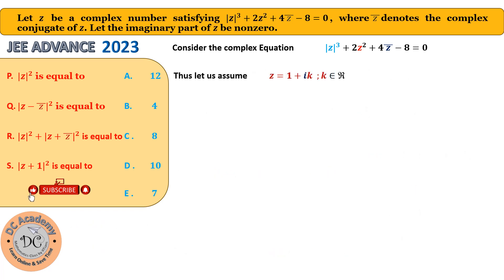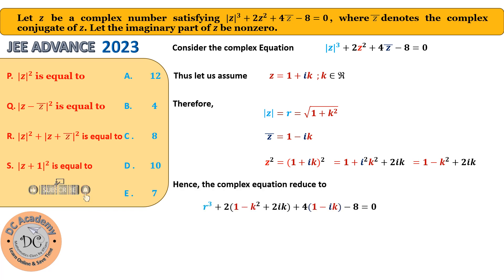So now, we calculate z. Therefore, |z| will be equal to √(1 + k²) which I assumed as R. z̄ is equal to 1 - ik. And z², you can directly calculate it by (1 + ik)². By expanding with (a + b)² formula, it will be 1 + i²k² + 2ik. i² will be -1. So therefore, it will be 1 - k² + 2ik. Let's substitute everything in the given complex equation. So therefore, we get that beautiful equation.